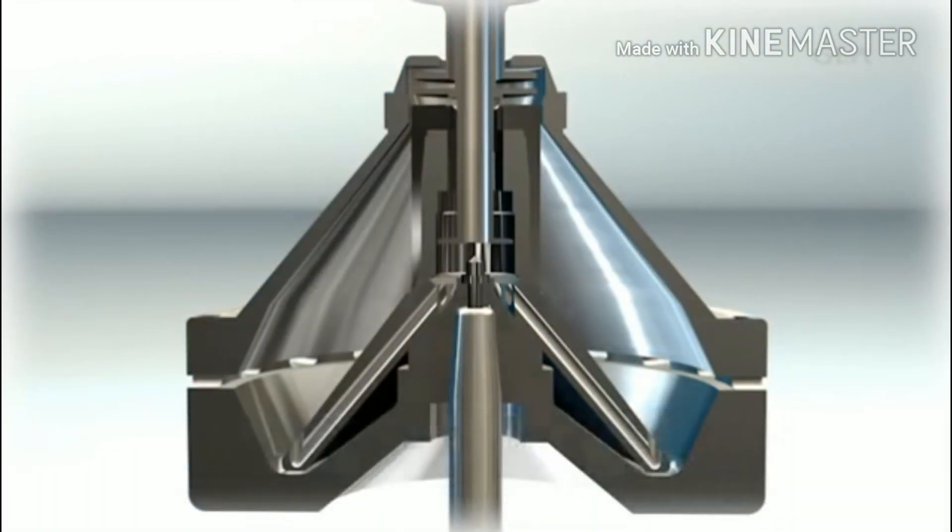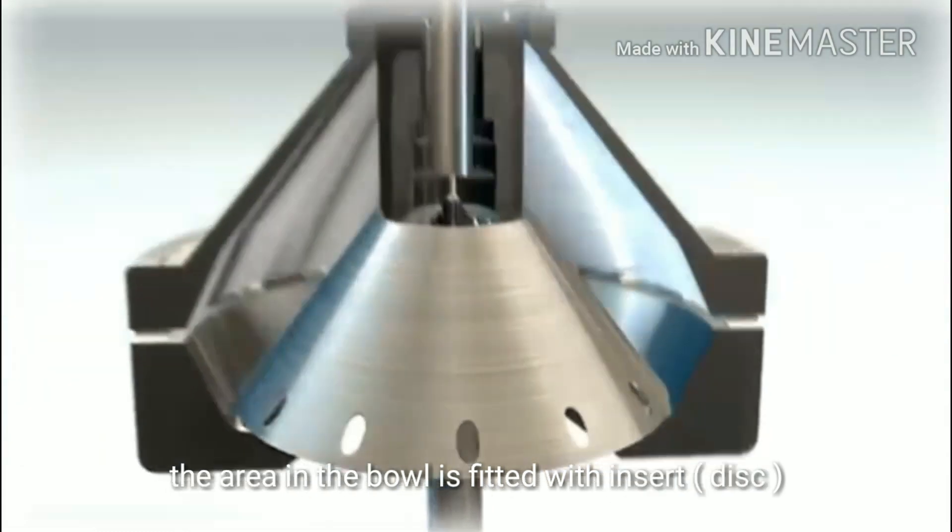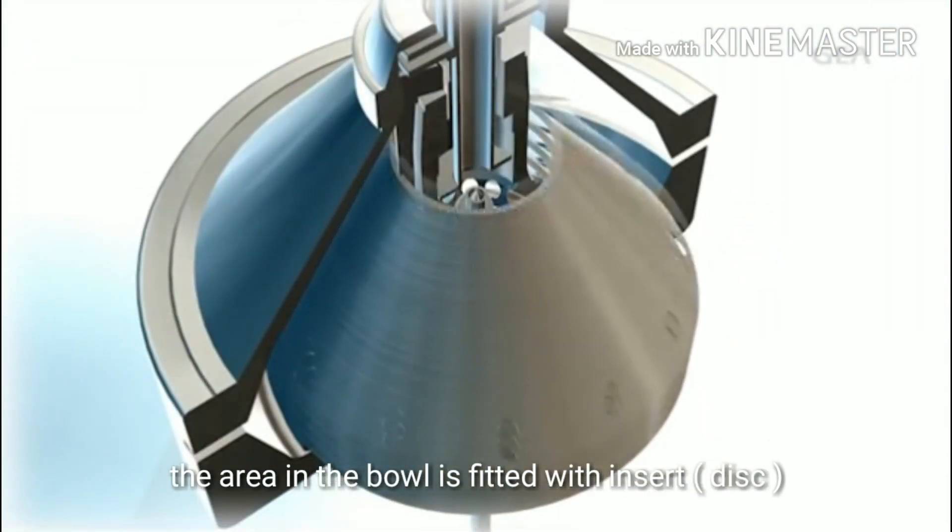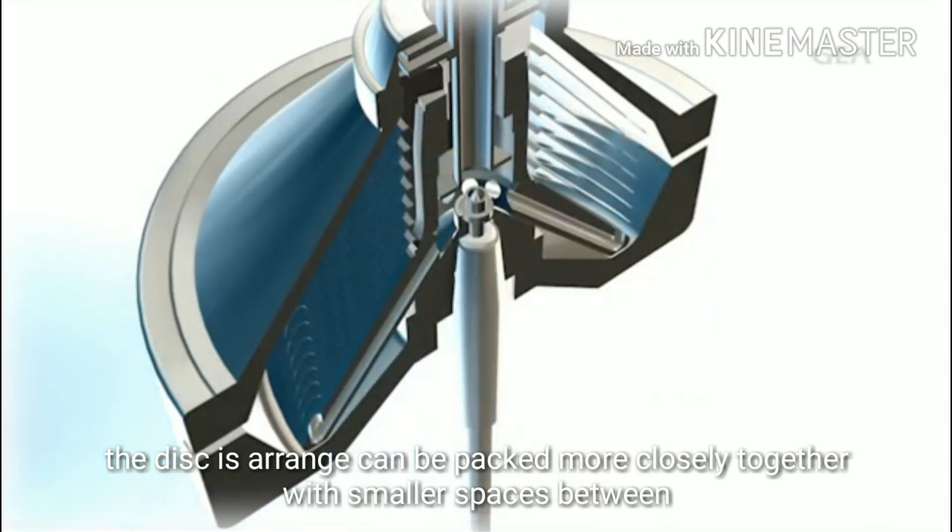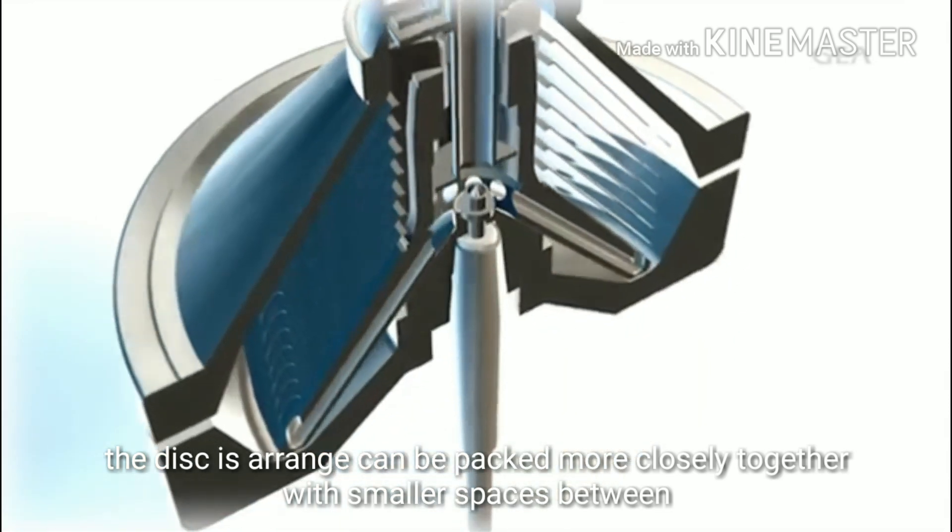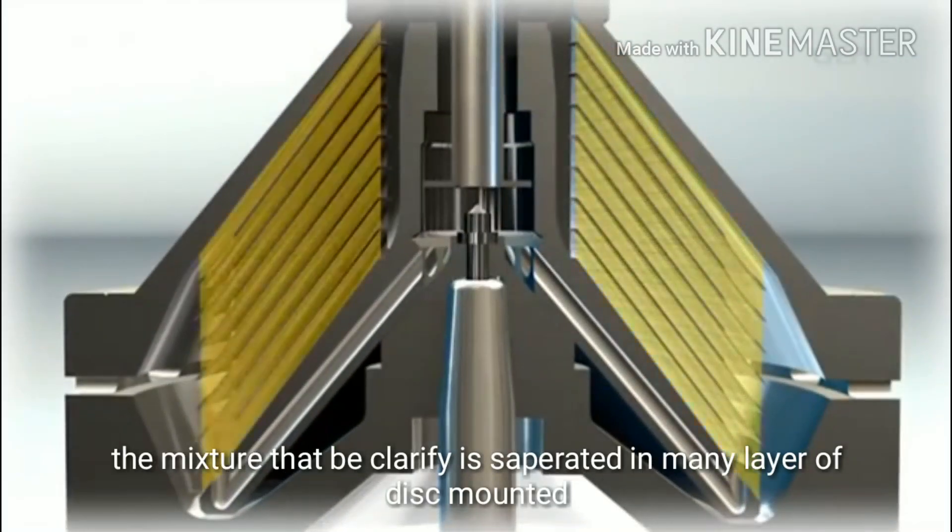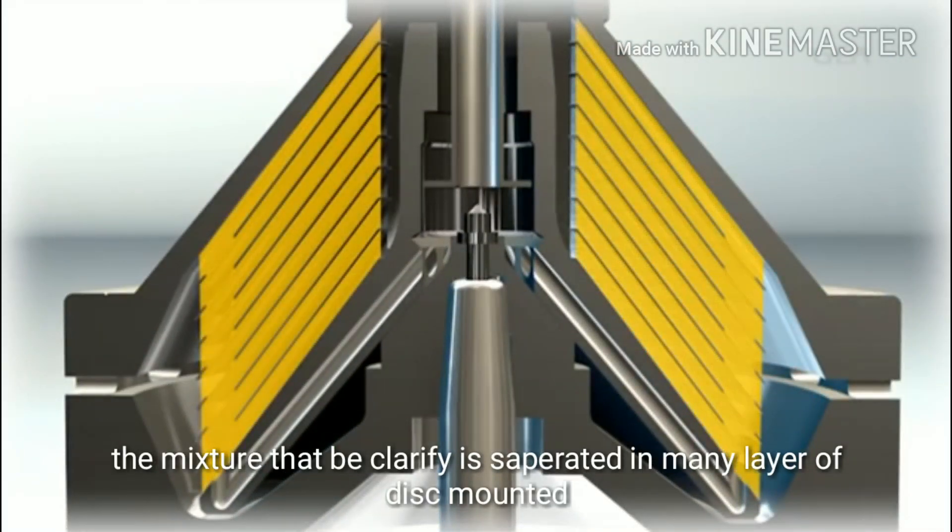Similar to the vessel mentioned above, the area in the bowl is fitted with inserts. Conically arranged discs can be packed more closely together with smaller spaces between. The mixture to be clarified is separated into as many layers as there are discs mounted.